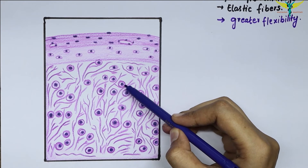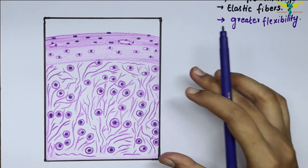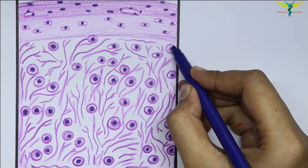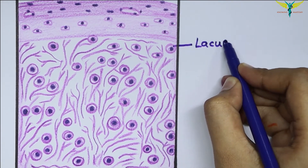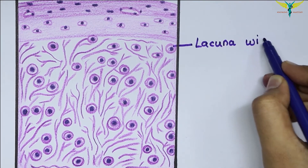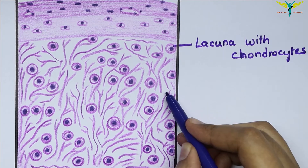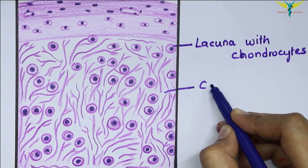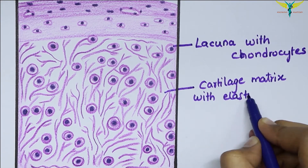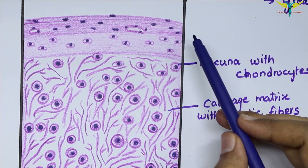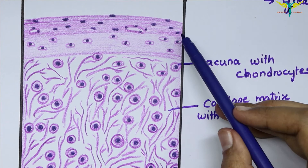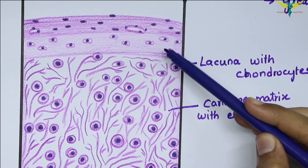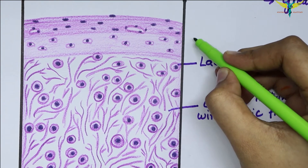Now coming to this diagram, the elastic cartilage is characterized by the presence of chondrocytes present within the lacuna, which is surrounded by bundles of elastic fibers. This is the lacuna with the chondrocytes, and this is the cartilage matrix with the elastic fibers.